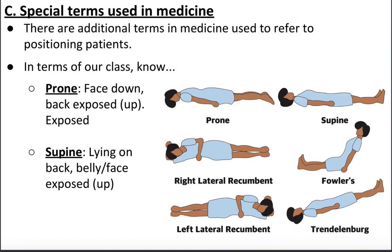There are also terms referring to body position used in medicine. Two important ones to know are prone and supine. Prone is when you're face down. Supine is when you're lying on your back with your face facing up. A way to remember prone: when you're prone, you're exposed and can't defend yourself — you can't see what's coming at you when you're face down.